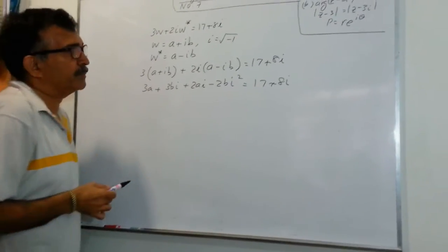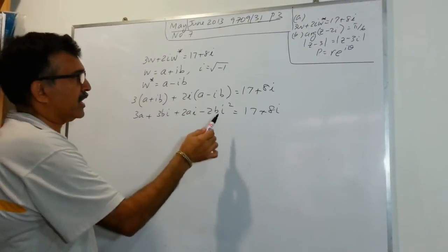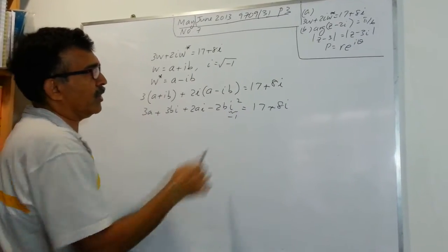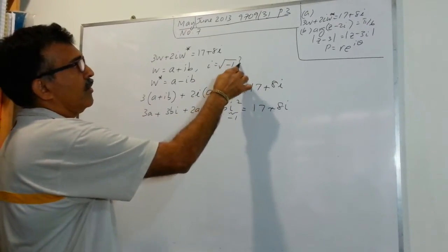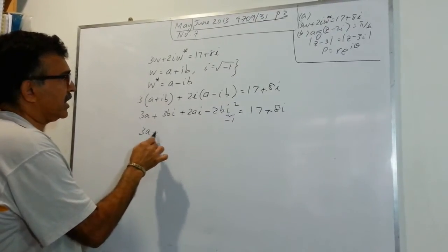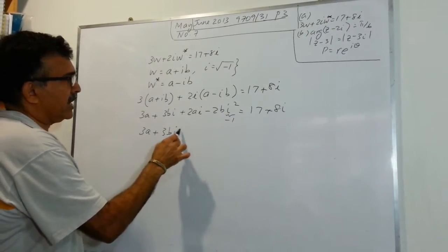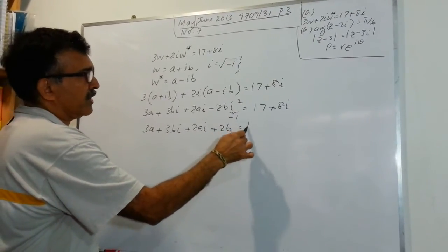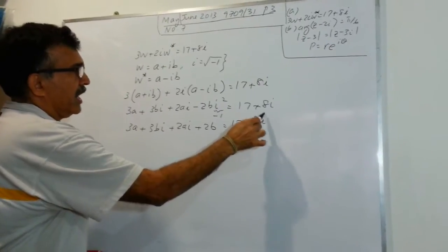Now let's collect some terms. Take note that we are looking at I squared, which is negative 1, from the definition of I. So we can write 3A plus 3BI plus 2AI plus 2B equals 17 plus 8I.